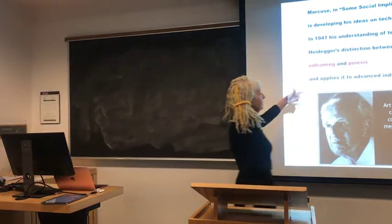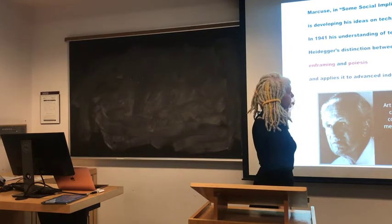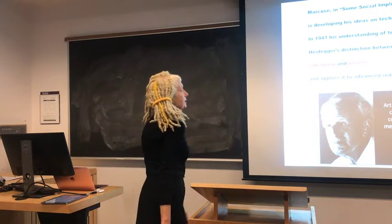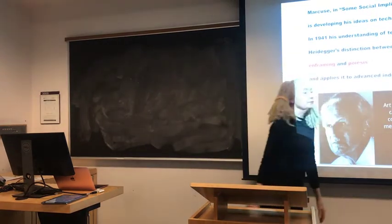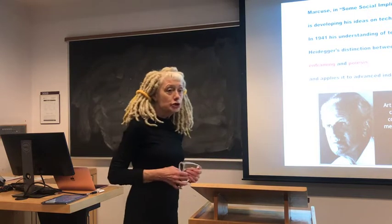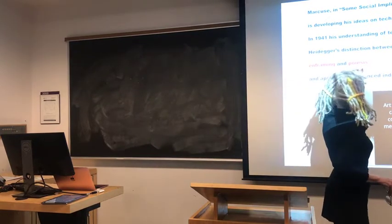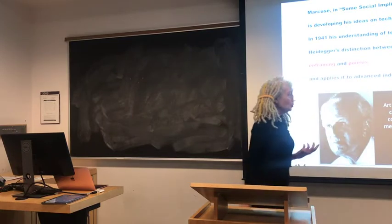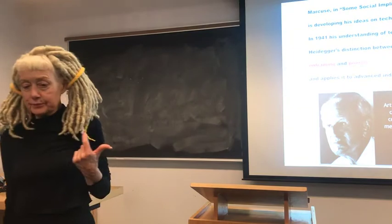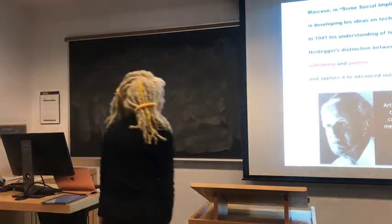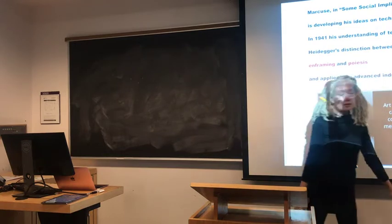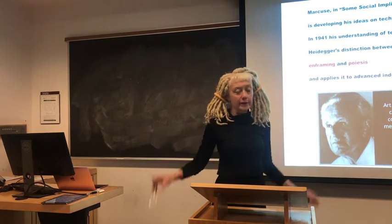In 1941, his understanding of technology contemporizes Heidegger's distinction between in-framing and poiesis, even though Heidegger's lecture is actually published later. Marcuse contemporizes this and applies it to advanced industrial society. He talks about unions being co-opted. In terms of poiesis and aesthetics, Marcuse says art cannot change the world, but it can contribute to changing the consciousness and drives of men and women who could change the world. He's also a Freudian — so you've got three really strong mixes in Marcuse: Marx, Heidegger, and Freud.